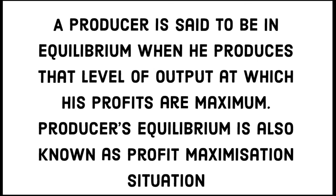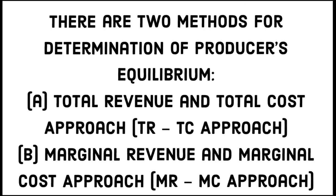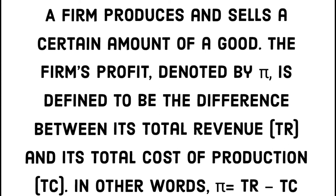We have two methods to determine producer equilibrium. Method one is the total revenue and total cost approach, in short TR minus TC approach. Method two is the marginal revenue and marginal cost approach. The firm's profit, denoted by pi, is defined as the difference between total revenue minus total cost — in other words, pi equals profit equals total revenue minus total cost.